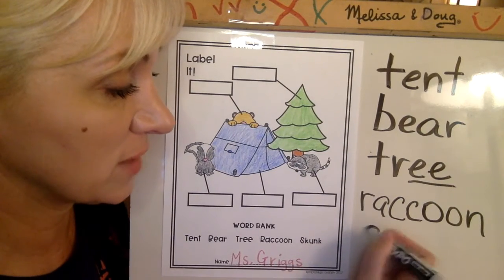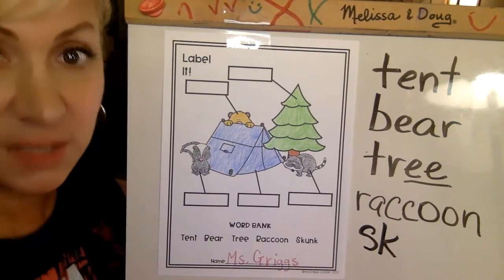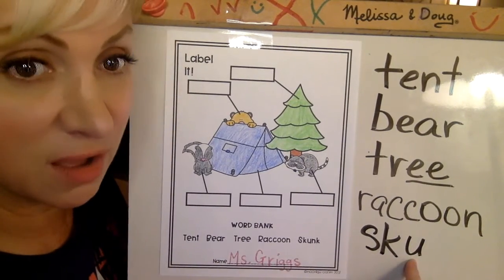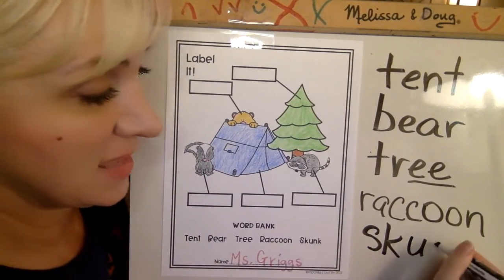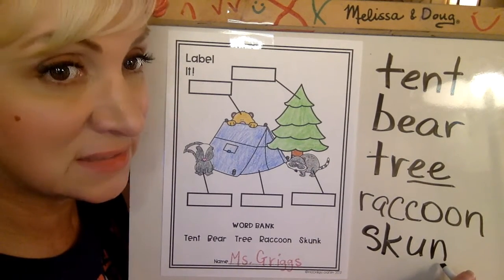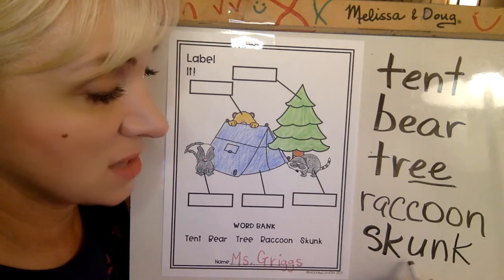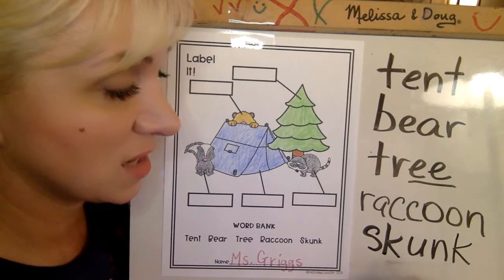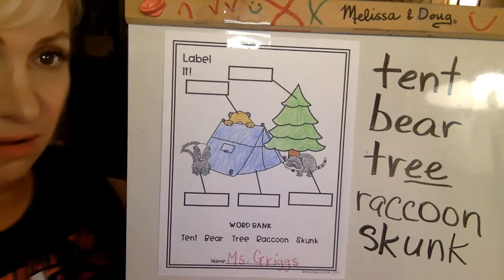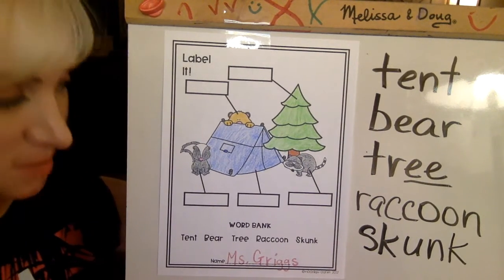Last one's kind of a fun word. We have SK, we have a U — SK-UH-N — SKUN, and then our K at the end: SKUNK. All right — tent, bear, tree, raccoon, skunk.